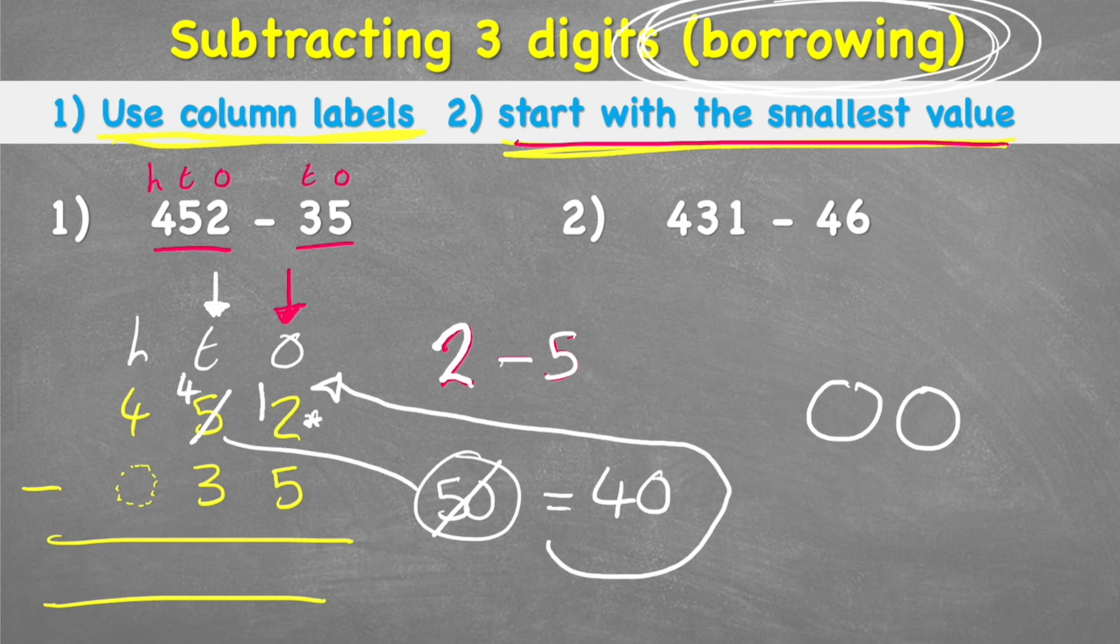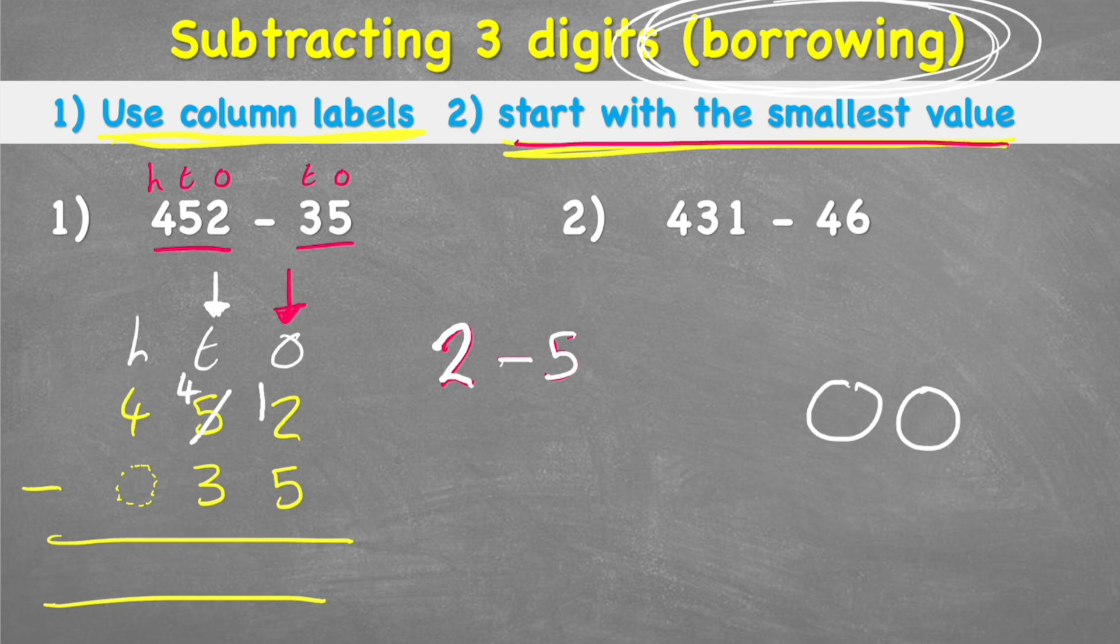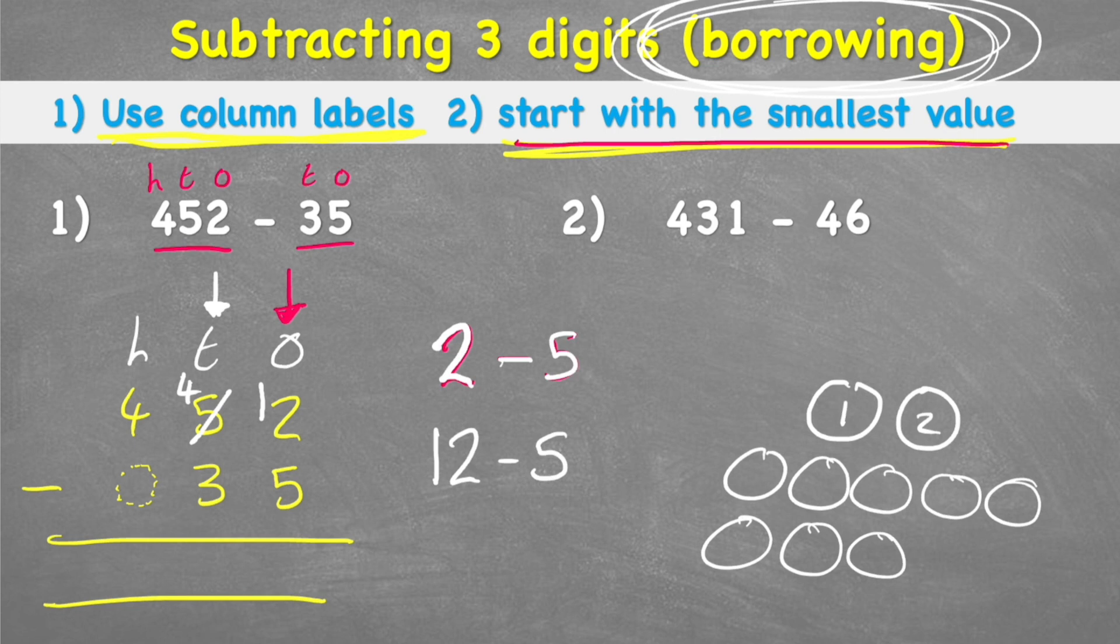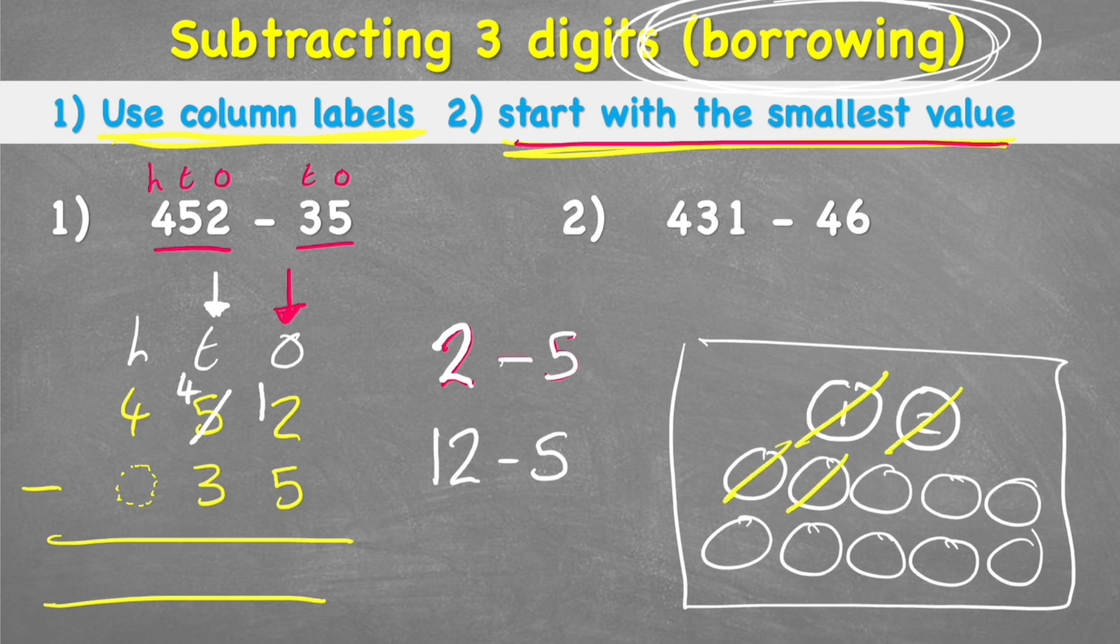Okay, that's a little bit confusing, isn't it? But essentially, what we've done is we've taken this 5, we've turned it into a 4, and we've given the 1 over here to the 1s column. So that now my question reads 12 subtract 5. And this I can do because now I have my 1 and my 2. And I can add the 10 that we borrowed. So, 1, 2, 3, 4, 5, 6, 7, 8, 9, 10. Giving me a total of 12. And now when I take away 5, I can say 1, 2, 3, 4, 5. And that leaves me with 1, 2, 3, 4, 5, 6, 7.